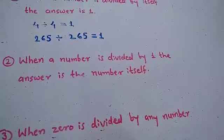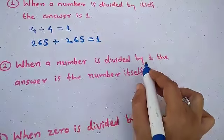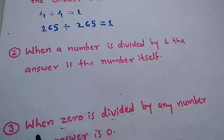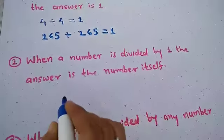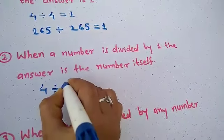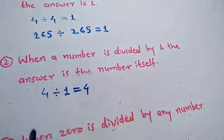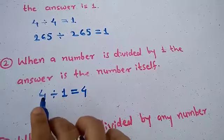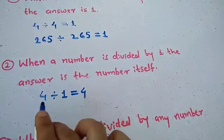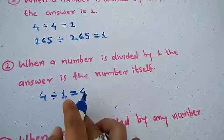Now the second property: when a number is divided by 1, the answer is the number itself. Let's look at an example — 4 divided by 1 is equal to 4. We divided 4 by 1, and the answer we got is 4. Whichever number it is, that same number comes as the answer.